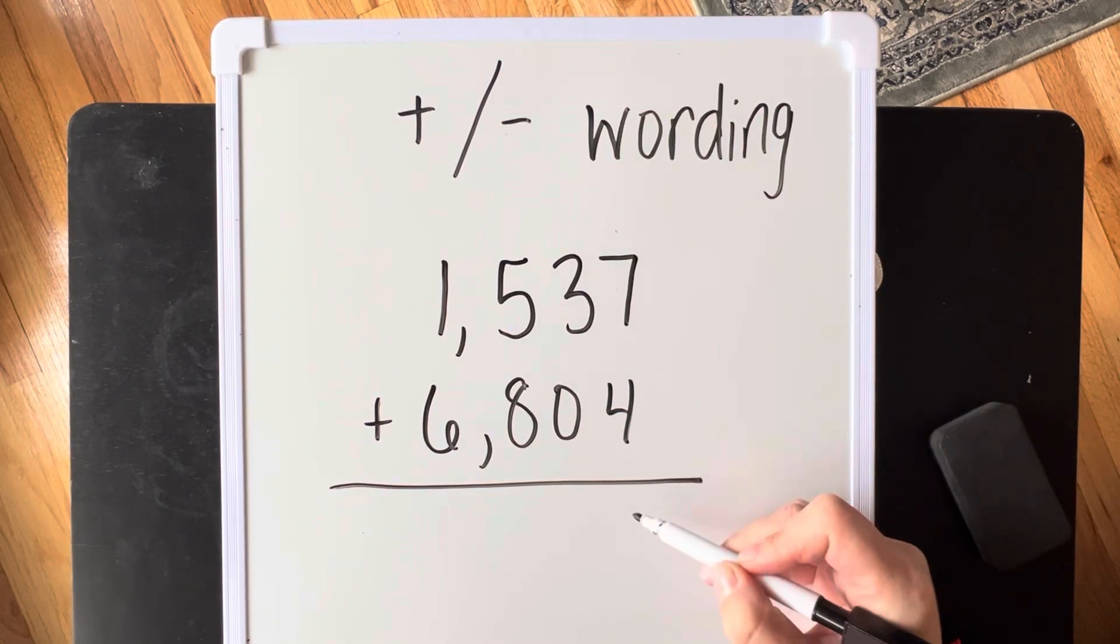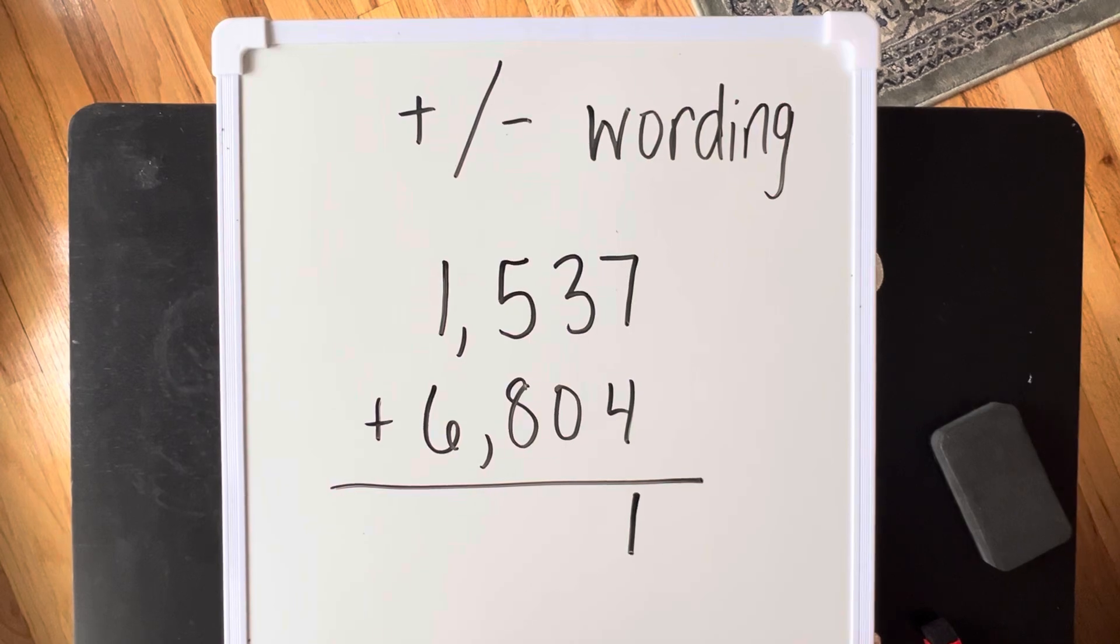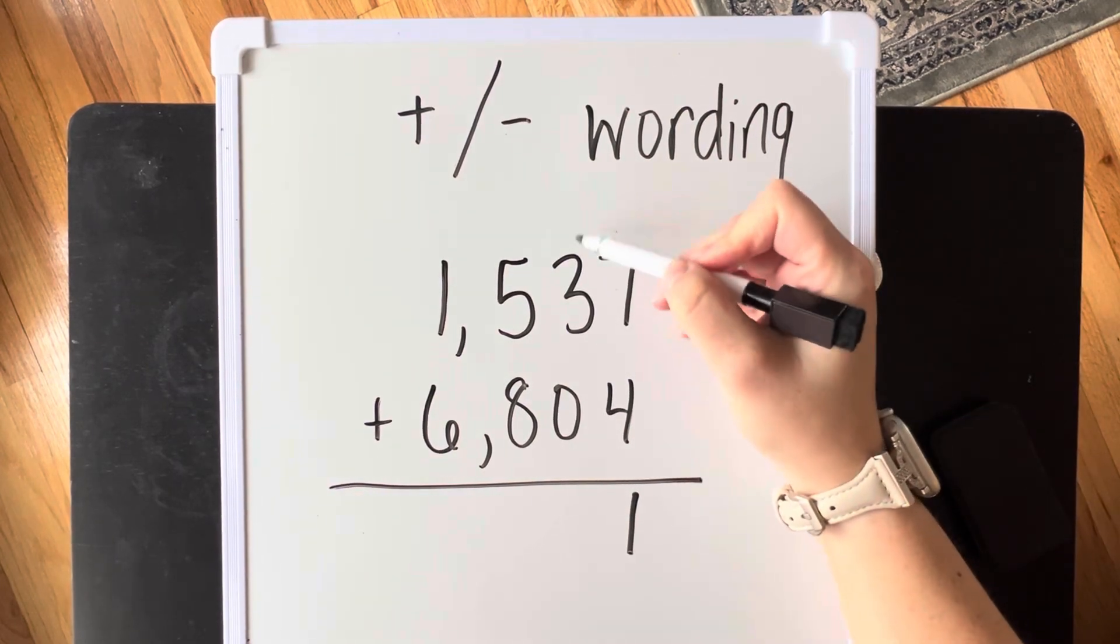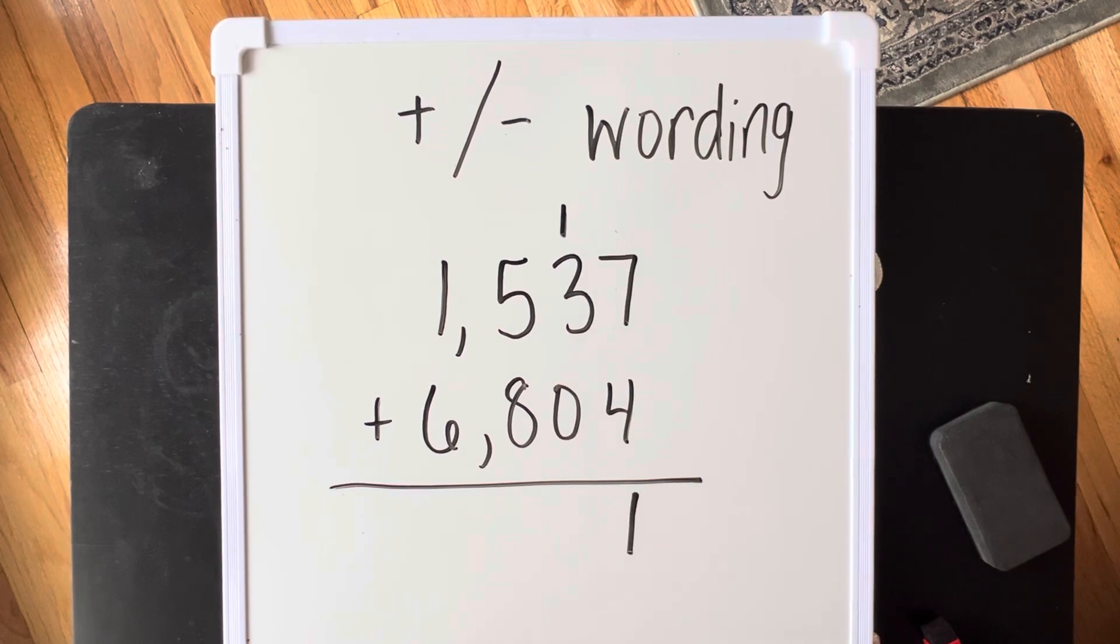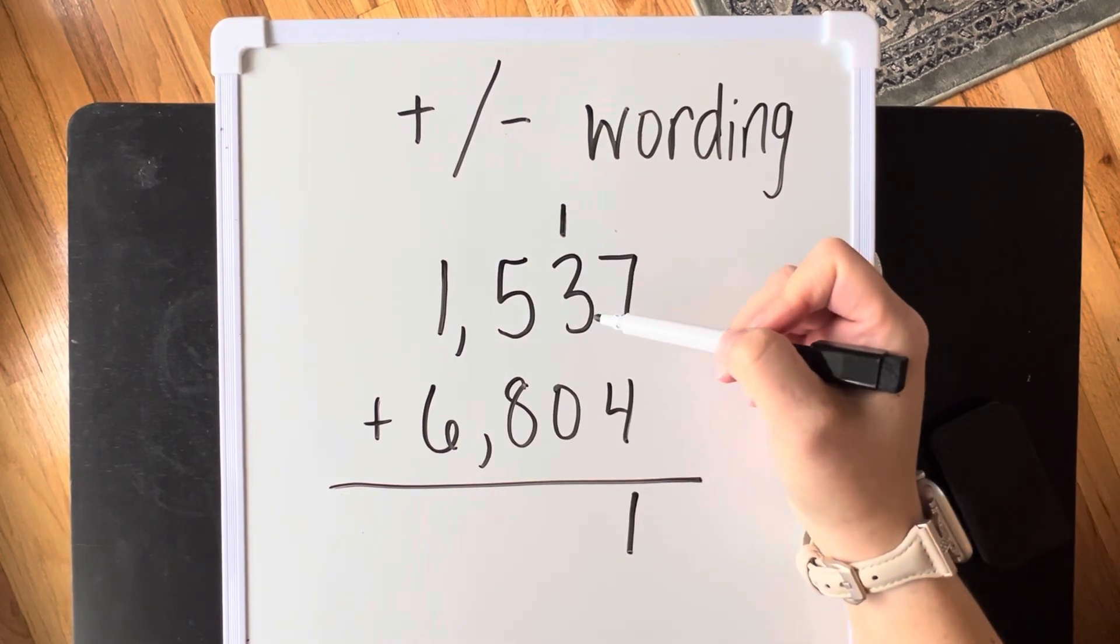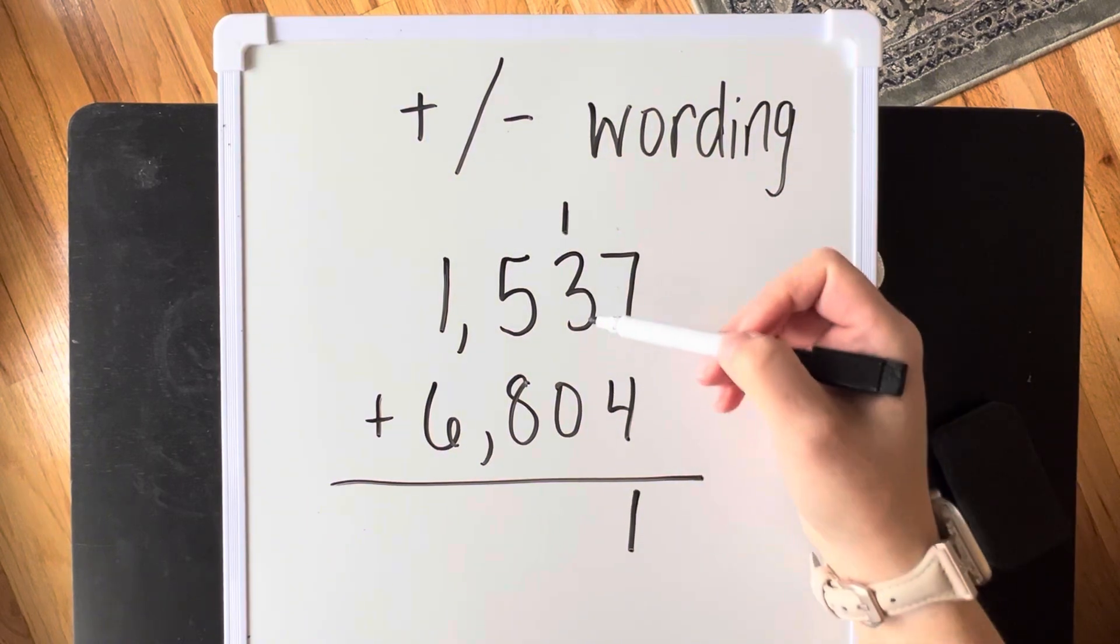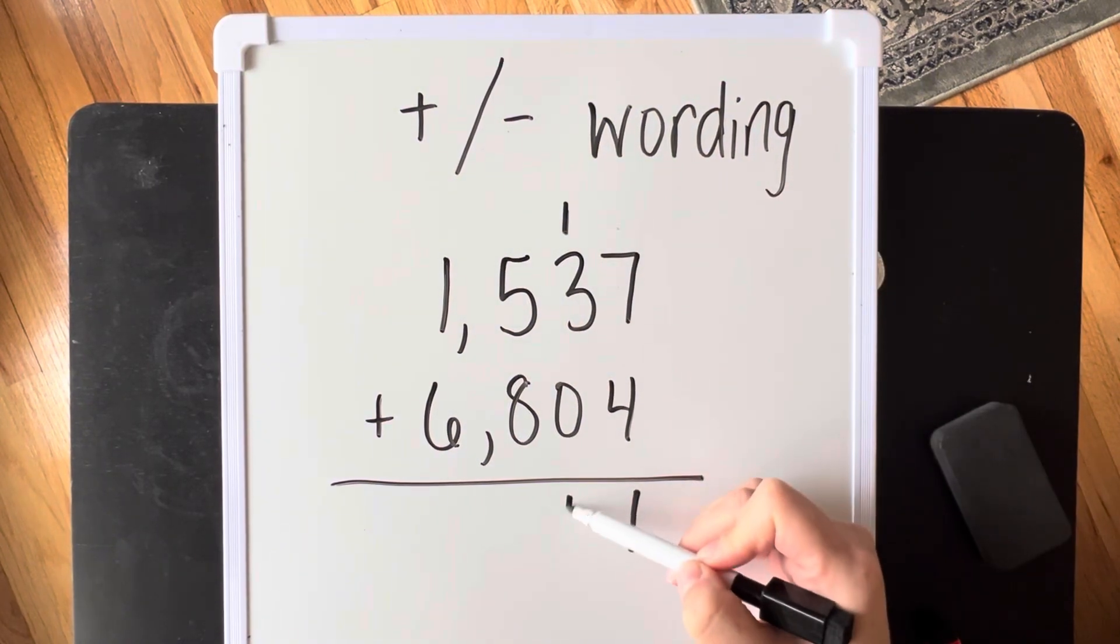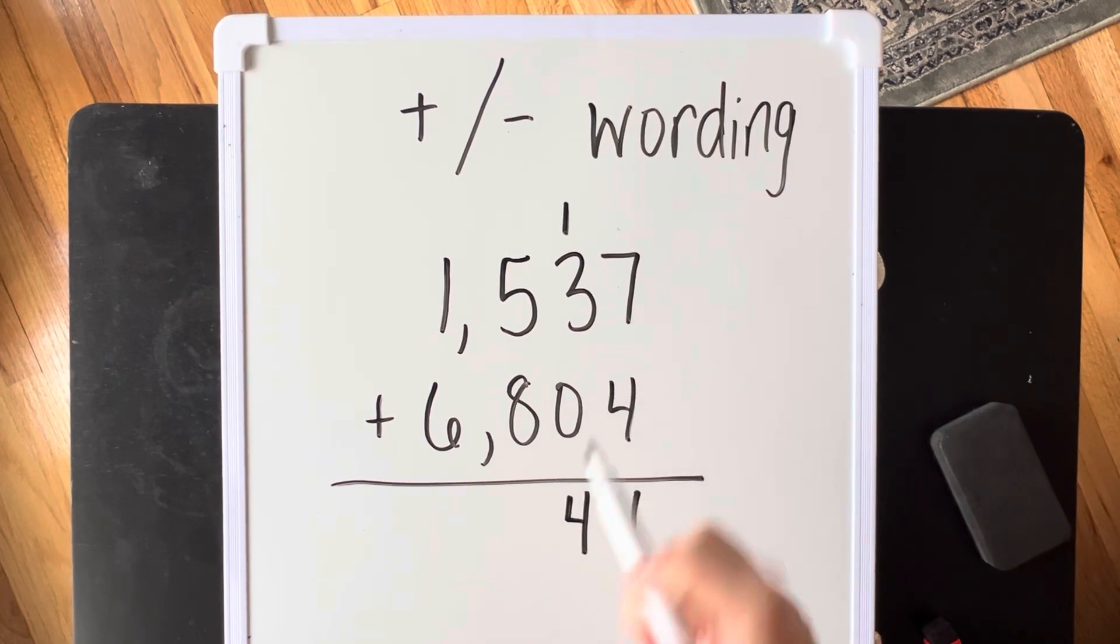So 7 plus 4 is 11. We are going to put our ones place down the bottom and we are going to regroup our 10 into the next place value. So when we are adding this, we should be saying in our brains, 3 plus 0 plus 1 is 4 tens here. Ones place, tens place. And we're going to keep going.